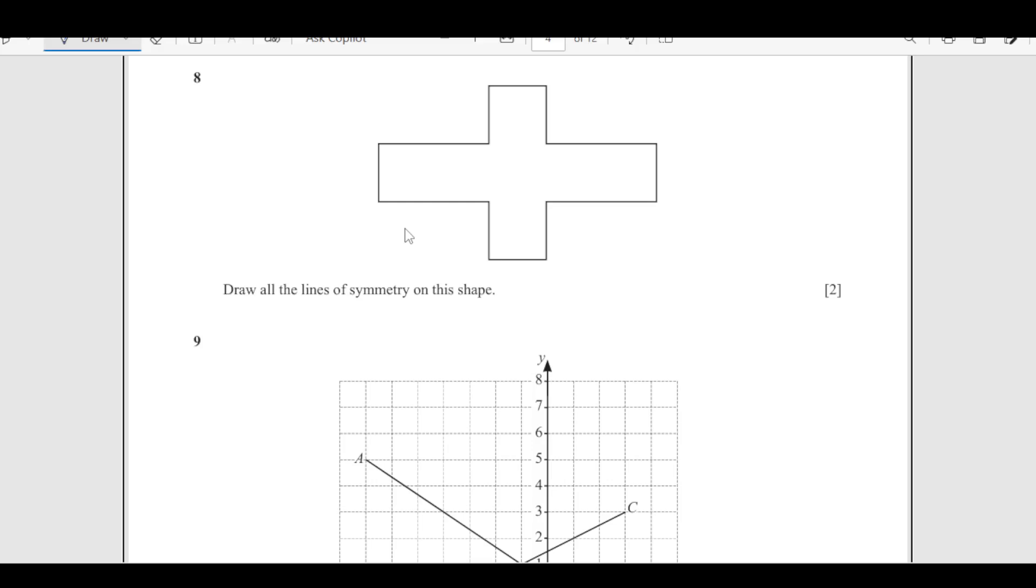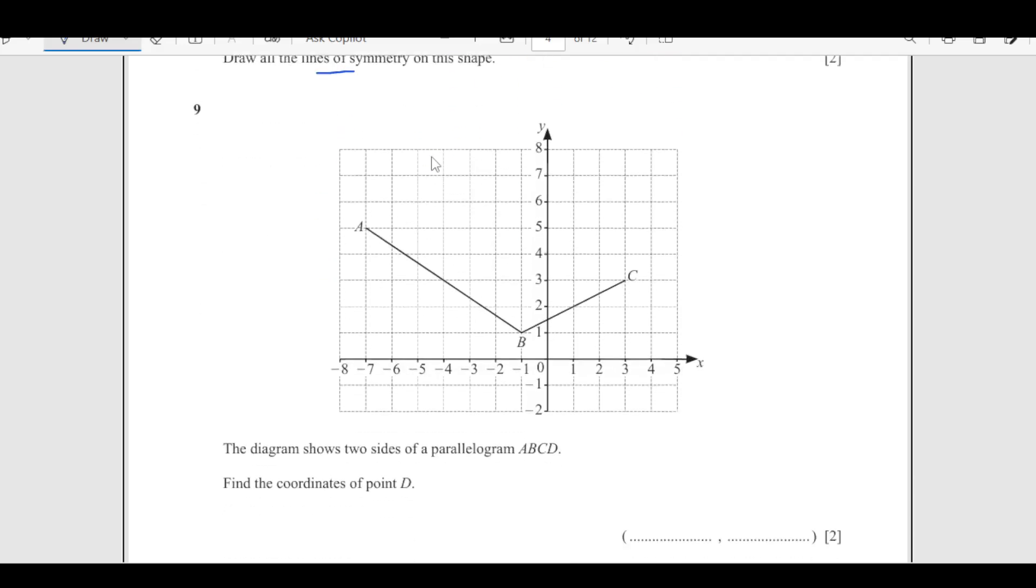Number 8: draw the lines of symmetry. Line of symmetry one is going to be here. The reflection line, you see upper part and lower part is same, so they will overlap each other. Another one is here. This is from left to right.